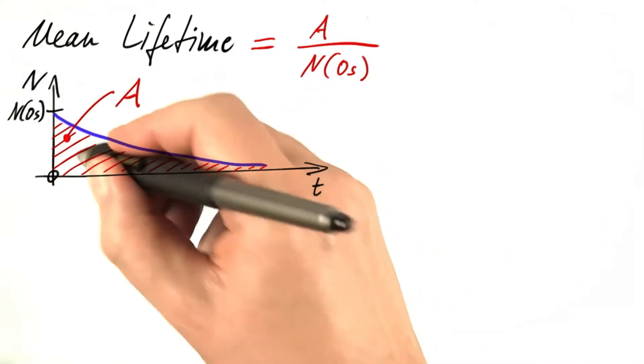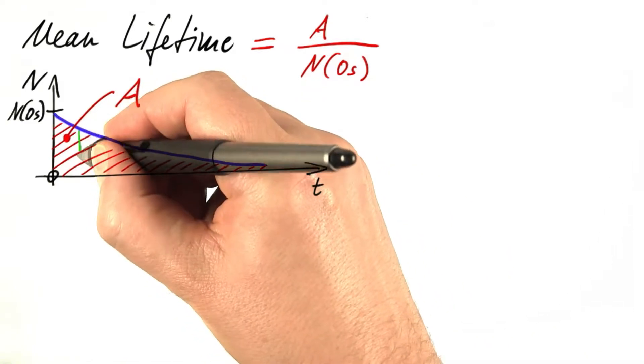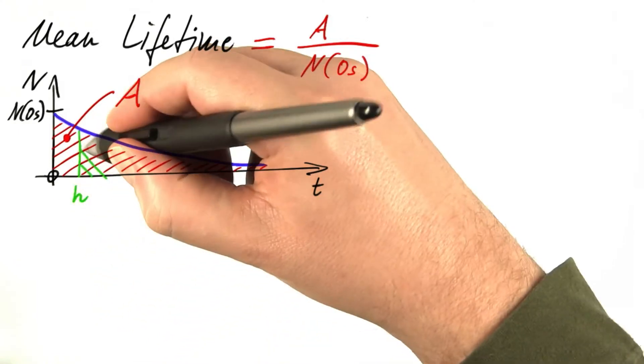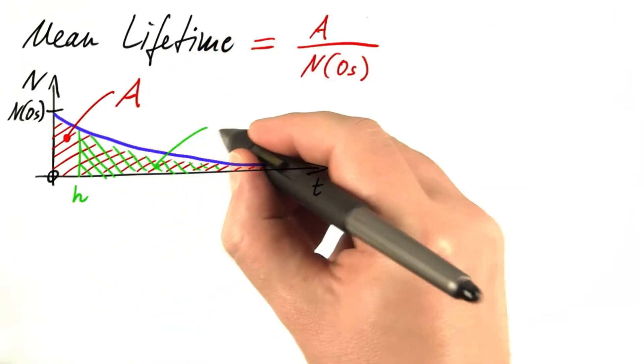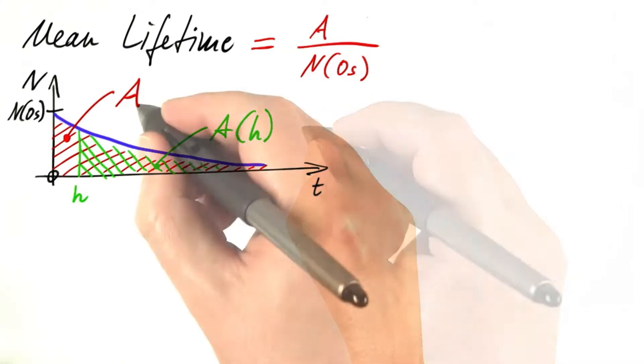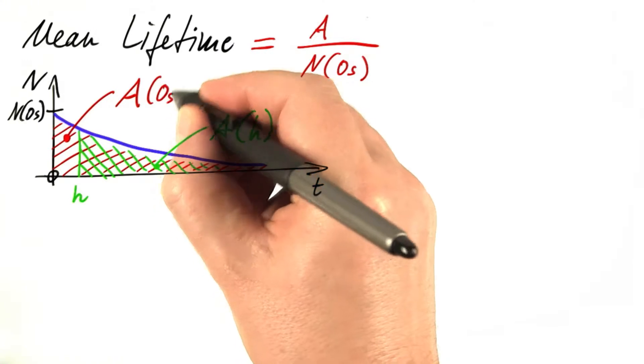Here comes a trick. I introduce a different area. I start at a time h, close to 0, and look at this area. Let's call that A of h and consequently call this A of 0 seconds.